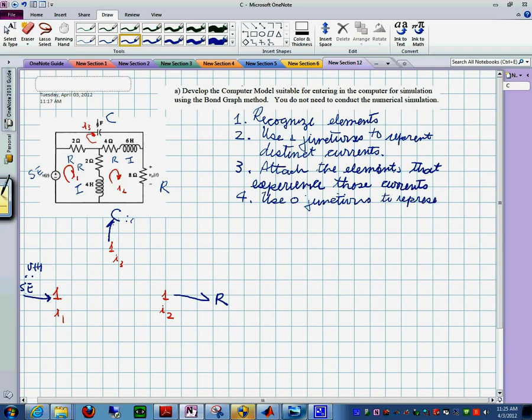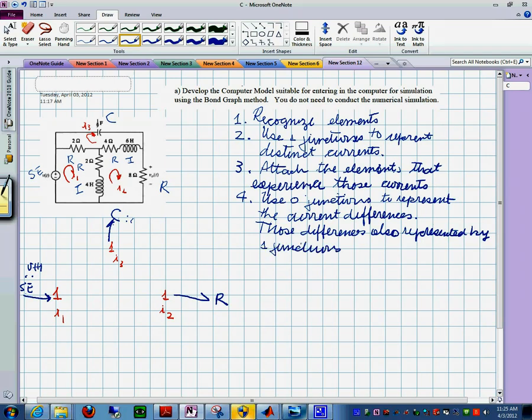Now what do we do? So we say use zero junctions to do what? To represent differences. And then you would say also, those differences are also represented by one junctions. Those results, you may say to make it clear, those results differences.